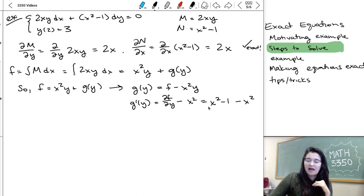And this becomes x squared minus 1 minus x squared. Or, g prime of y is minus 1.